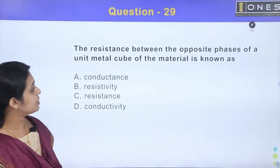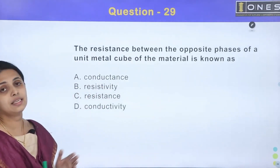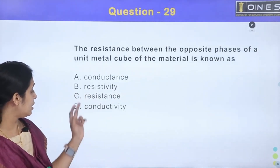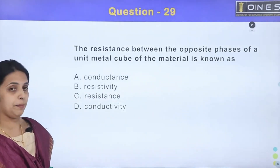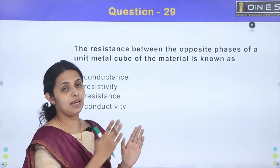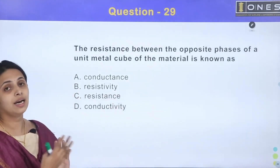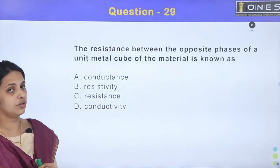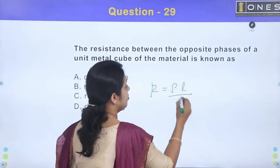Next question: the resistance between the opposite faces of a unit metal cube of the material is known as — option A: conductance, option B: resistivity, option C: resistance, option D: conductivity. We use the formula R = ρL/A for a unit-dimensional cube.